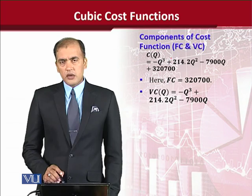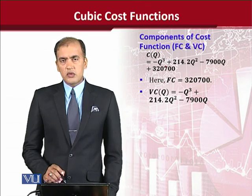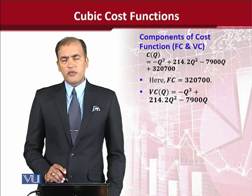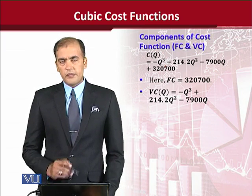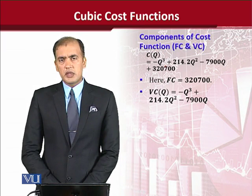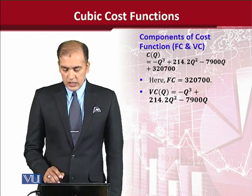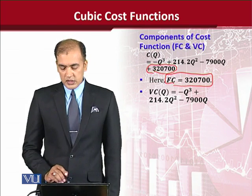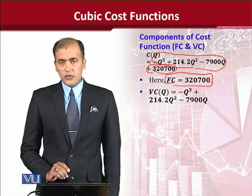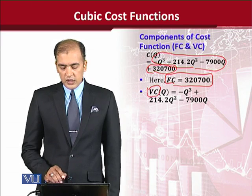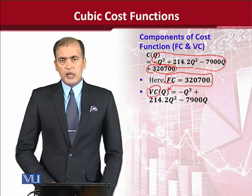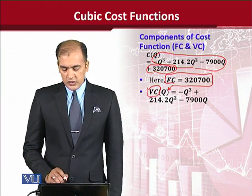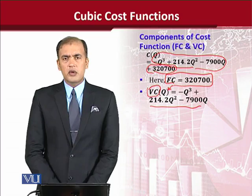The final comment about this cubic cost function is that we can decompose any cubic cost function into two parts. As per theory, cost is composed of two components: fixed cost and variable cost. Fixed cost is independent of the level of output and should not contain the term q — that term which is free of q is the fixed cost component of total cost. The remaining part contains terms of q and should be called variable cost, and we can write q as an independent variable to show that variable cost depends upon the level of output.